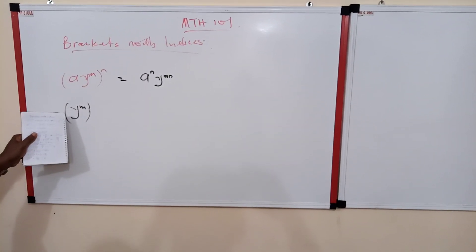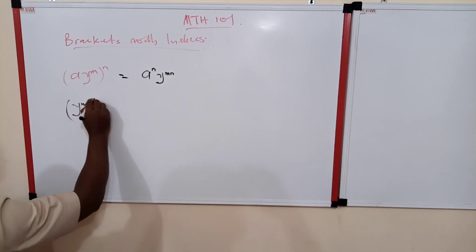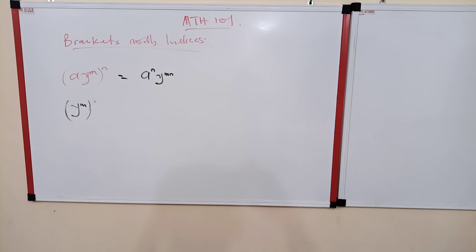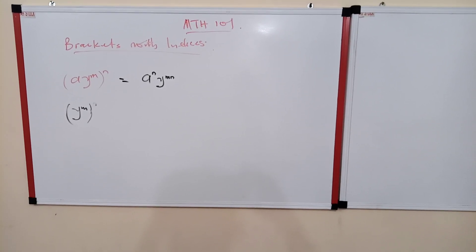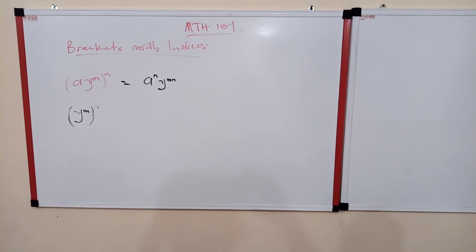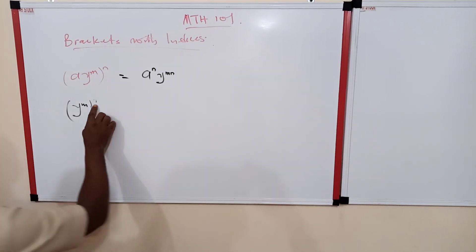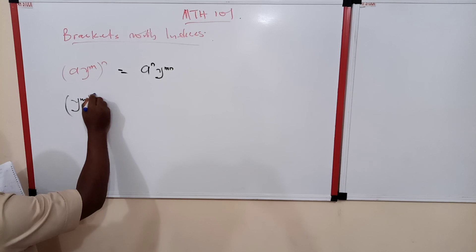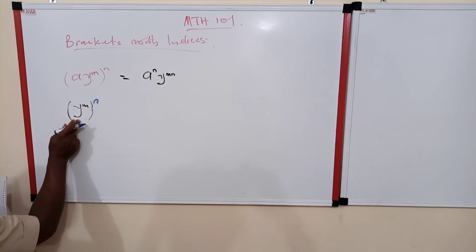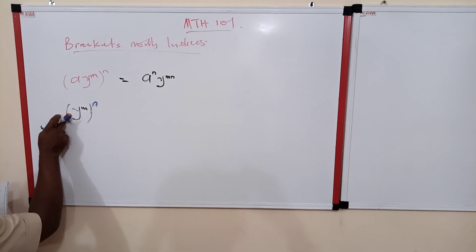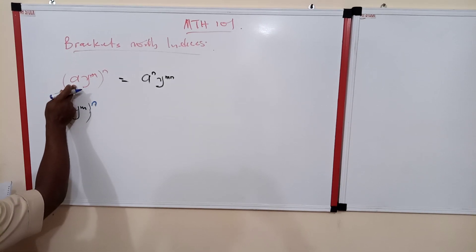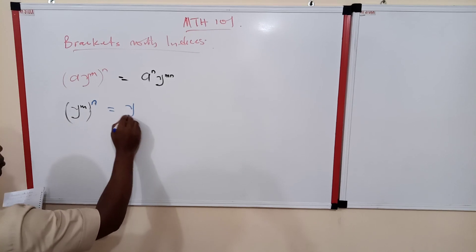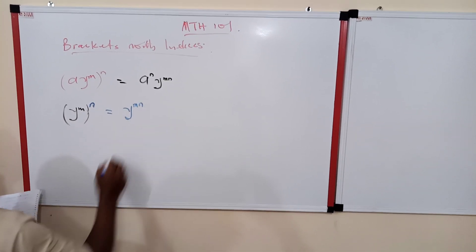In this case we don't have the coefficient, maybe we just have y^m raised to power n. Because of the bracket, this n is affecting everything inside. In the other case we have a coefficient; in this case we don't. The simple thing we do is multiply the powers.